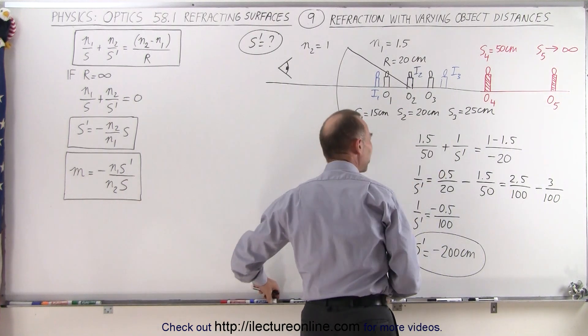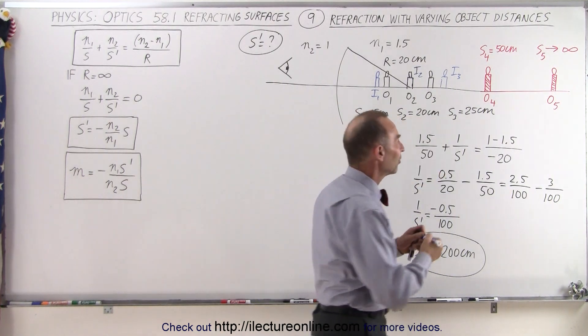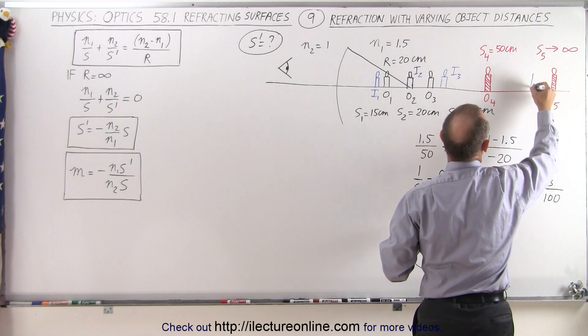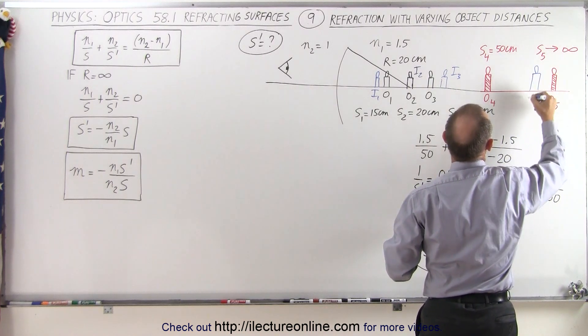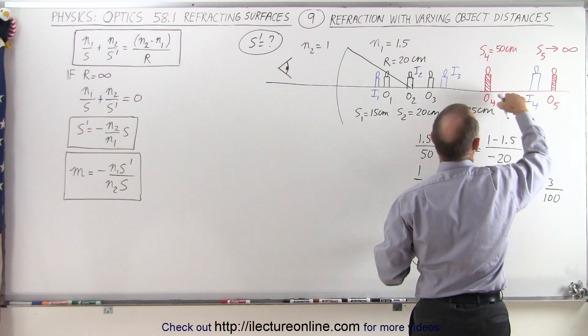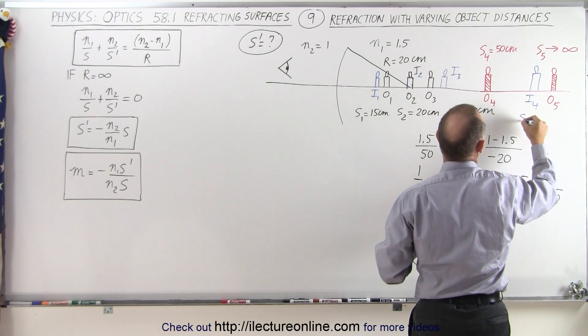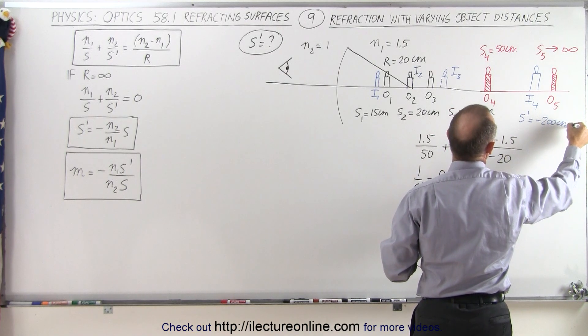Of course I don't have 200 centimeters on the board—we'll simulate it. So here the image, this would be image 4 from object 4, and that would be at s prime is equal to minus 200 centimeters. We'll call it s4 prime.